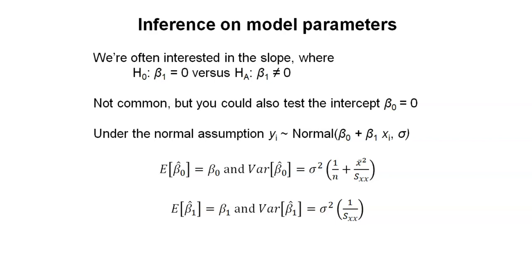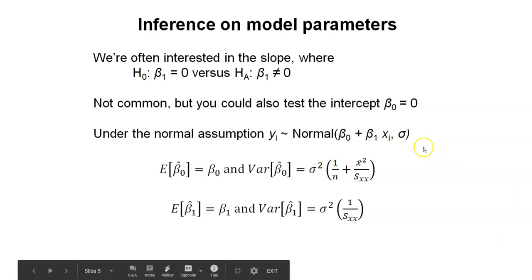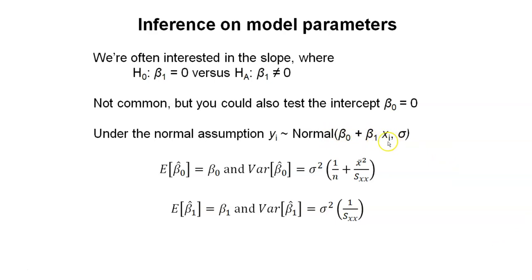In this case, we're going to use the normal assumption and assume that y sub i is distributed normally with a mean value of beta 0 plus beta 1 times x i. That is the predicted value with some standard deviation sigma. We can then find the expected value, which we denote with the uppercase letter E. The expected value of beta 0 hat is going to equal beta 0. And the expected value of beta 1 hat is going to equal beta 1.